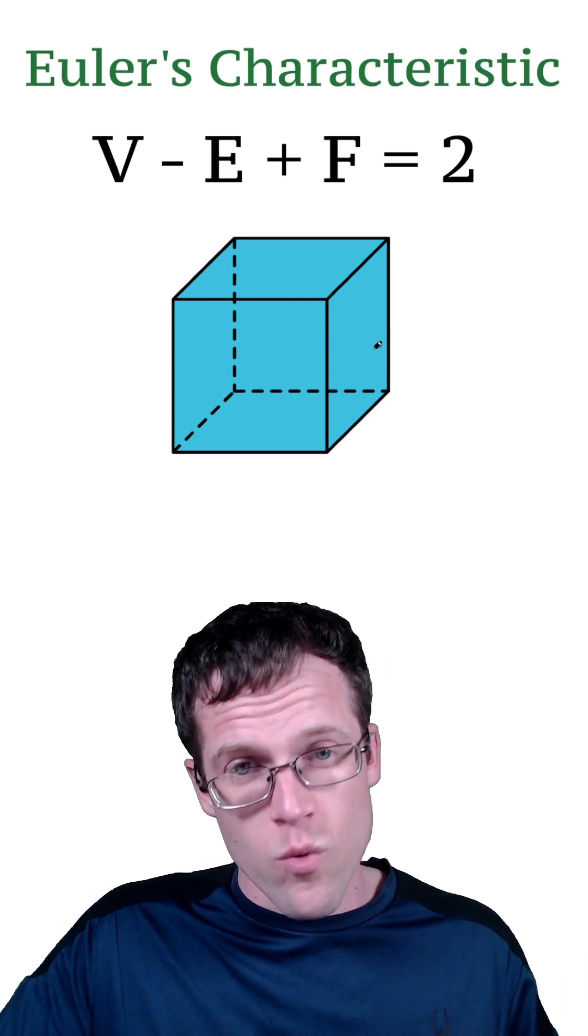Leonard Euler, who many mathematicians consider to be the GOAT of mathematics, came up with this really cool formula: V minus E plus F equals 2.